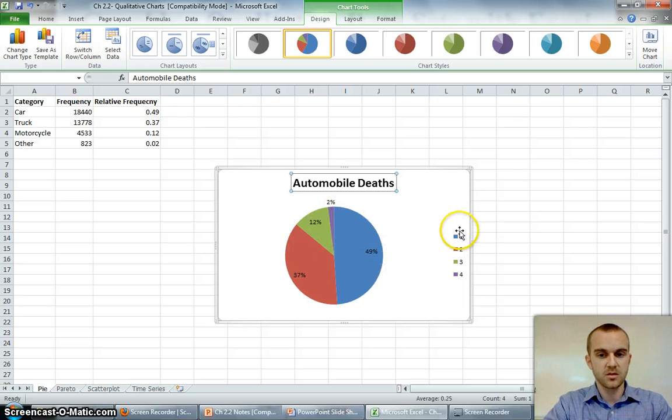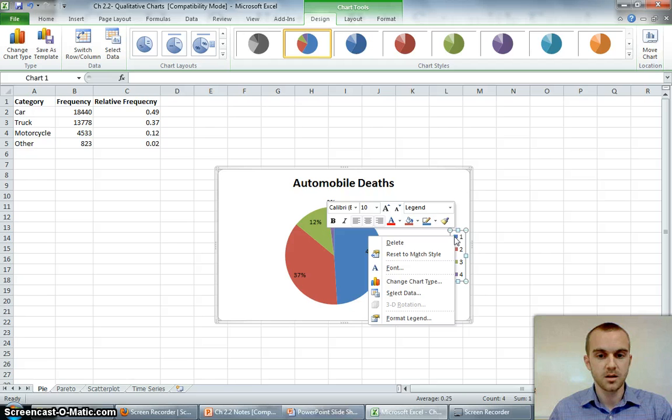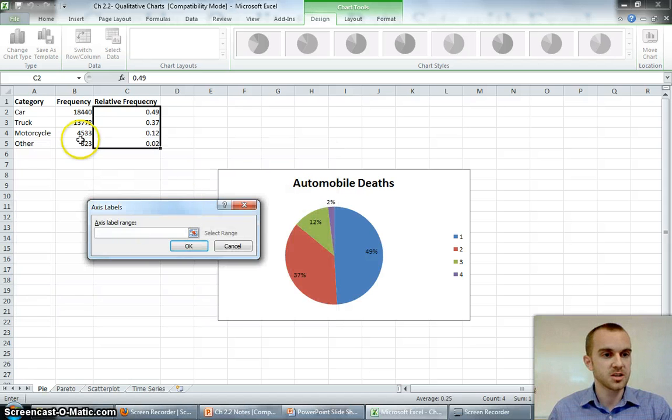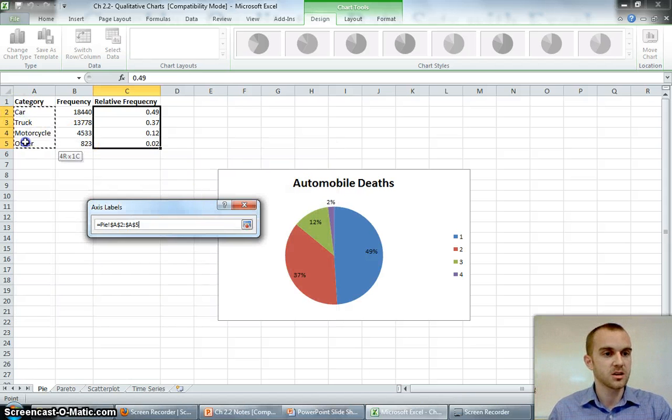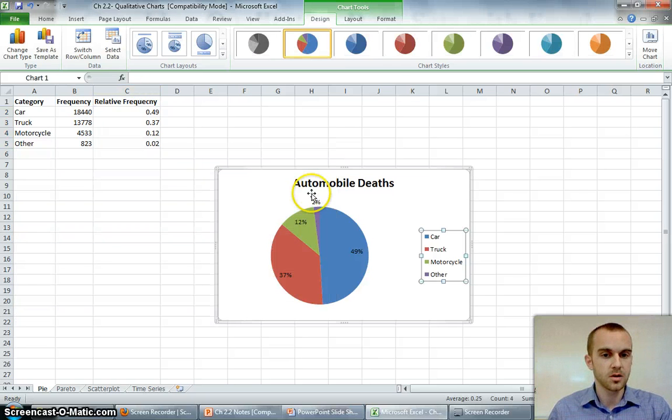Now, you can see I've got the percents there already. What I do want is, instead of having this 1, 2, 3, 4, that doesn't make any sense. So, I want to change my key so that it matches with my categories. So, I'm going to right-click. I'm going to select my data. And again, it's that horizontal axis I want to change. That's just going to be my categories. But now, if I look, I've got my title, I've got my key, and I've got the percents in there to help me out.